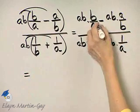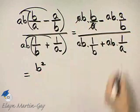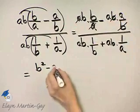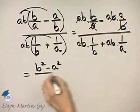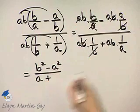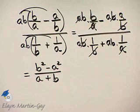And now, watch what happens. The A's divide out, and we have B squared, B times B, minus the B's divide out, and we have A squared over the B's divide out, and we have A, plus the A's divide out, and we have B. That is so much nicer, and it is a rational expression now,